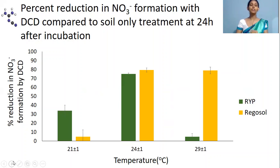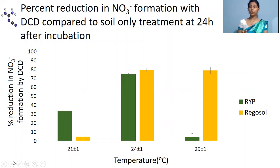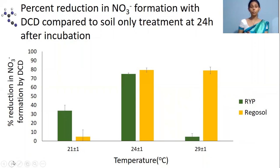You can observe the percentage reduction in nitrate in RYP soil is higher under lower temperatures, while in Regosol soil, the percentage reduction in nitrate formation is higher under higher temperatures.